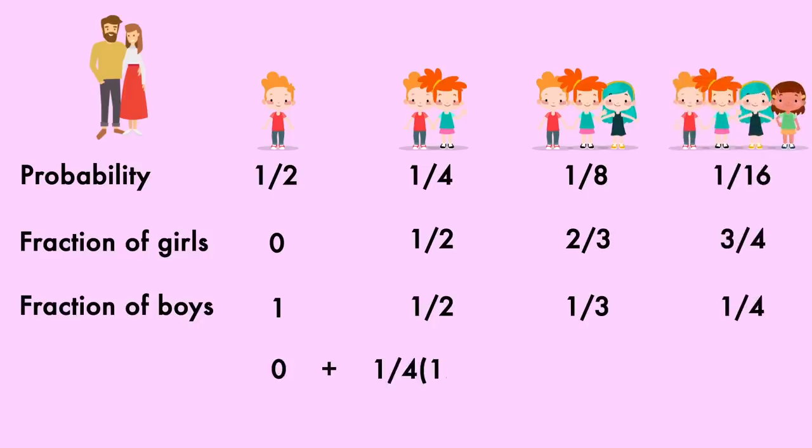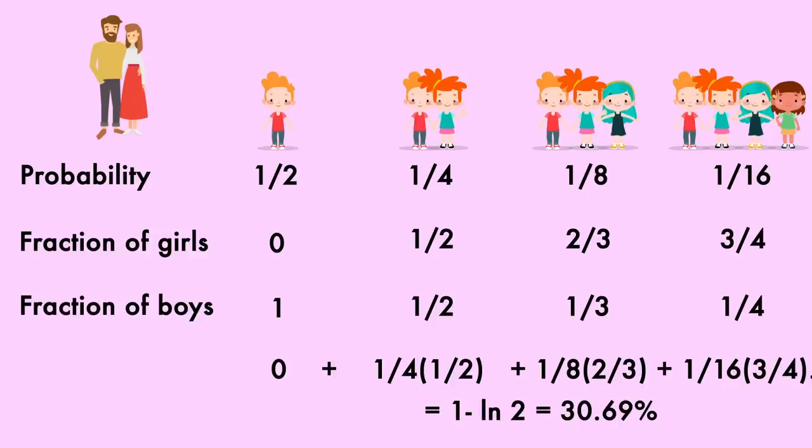Now if we calculate that expected fraction by multiplying the probability by the fraction of girls in each case, we get 1 minus the natural log of 2, or about 30.69%. So yes, we do expect the number of boys and girls to be equal, yet the expected fraction or percentage of those that are girls is not one-half or 50%. But this is only if every village has one couple.